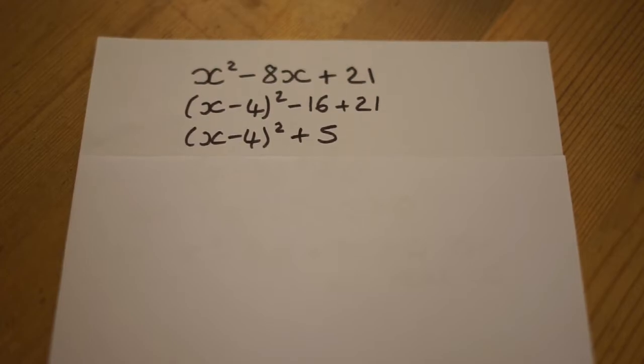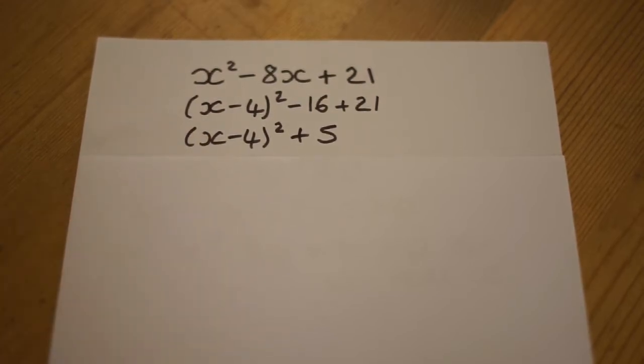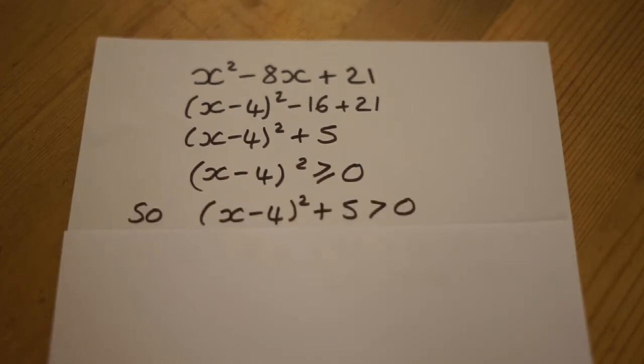Given that the square of any real number is always positive or zero, we're able to write this statement. Because adding 5 is only going to make a greater positive number, this is now true.